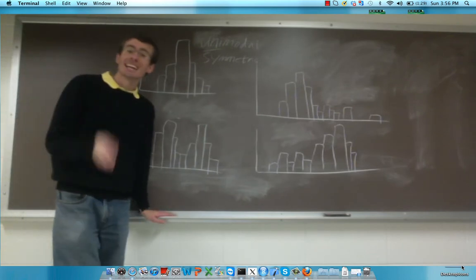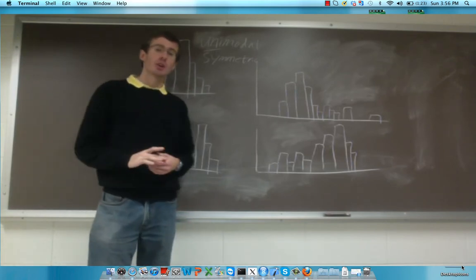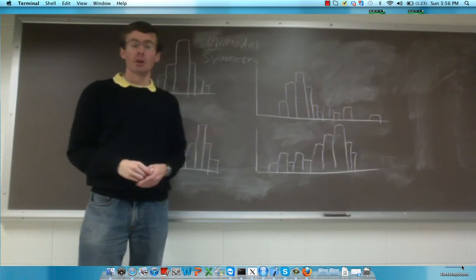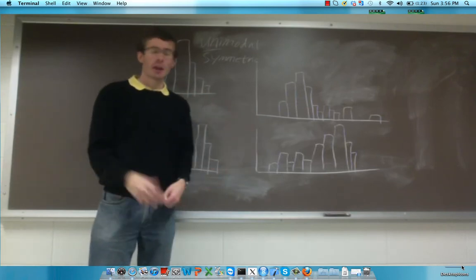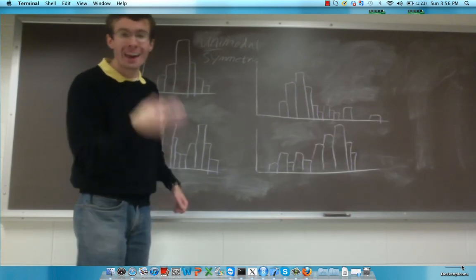And in this case, we have a distribution that is unimodal and symmetric. All three of the measures of central tendency are good descriptions of the center of our data. Mean, median, and mode are all very good measures, and they all happen to be roughly equal when you have a distribution that is unimodal and symmetric.